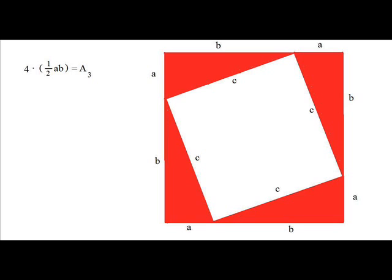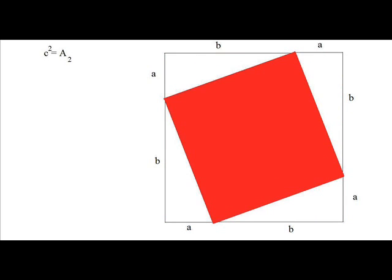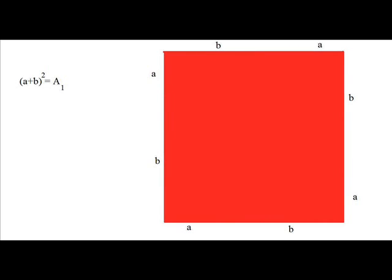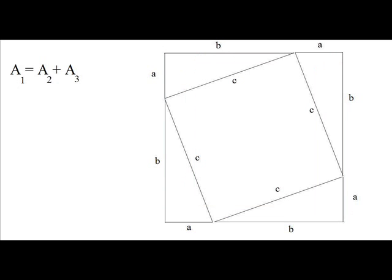If we take the area of the four triangles plus the area of the interior square, we arrive at the area of the large exterior square. So A1 equals A2 plus A3. Substituting the values, we replace A1 with A plus B squared — the sides of the large exterior square — and that equals C squared plus four times one half AB, which is the area of the four triangles surrounding the interior square.